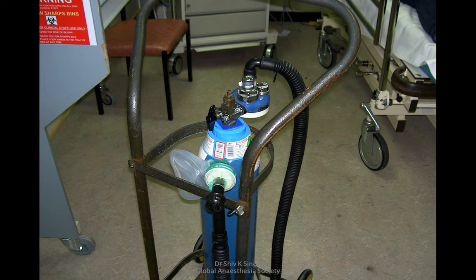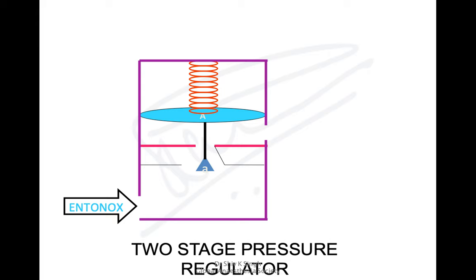The next OSCE was on this — an Entonox cylinder. You can see that this pressure regulator is slightly different, and there is a large breathing tube attached to it with a filter and mask at the other end. This is called a two-stage pressure regulator, but it is actually a pressure regulator attached to a demand valve. One side has the pressure regulator just as explained — a high pressure chamber and low pressure chamber.